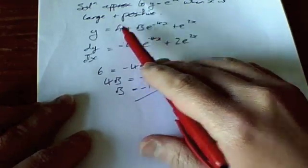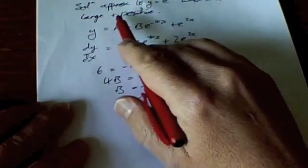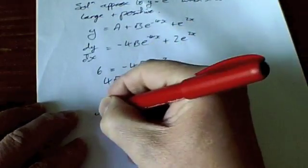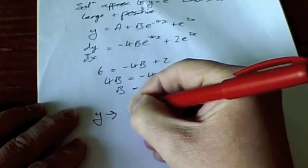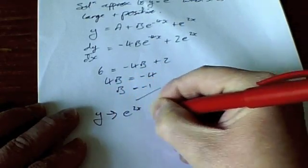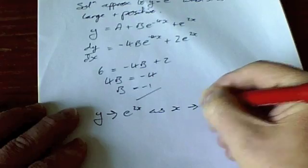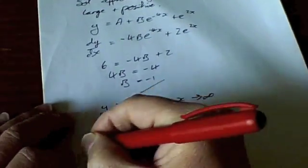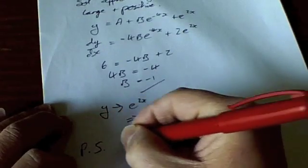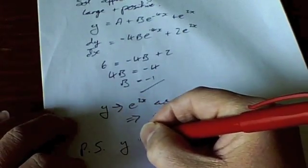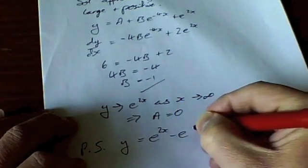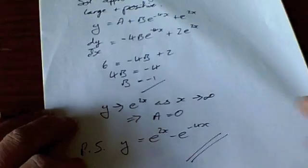And in fact to be fair so A is 0, so y tends to e^(2x) as x tends to infinity implies that A equals 0. So my particular solution then for this curve is y equals e^(2x) minus e^(-4x) and that's the end of that question.